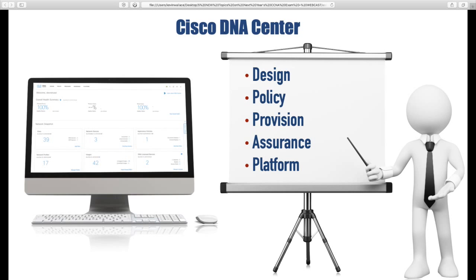For your notes: Cisco has one solution primarily for the data center called ACI — Application Centric Infrastructure — which has a controller called the APIC managing your Nexus devices. Think of ACI as your data center management solution, and Cisco DNA Center as your enterprise management solution. ACI for data center, DNA Center for the enterprise.